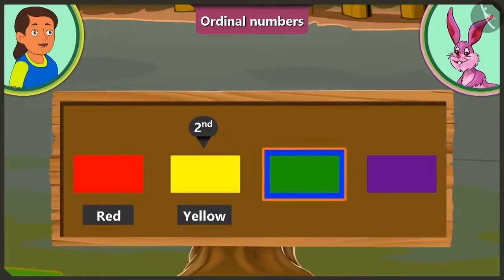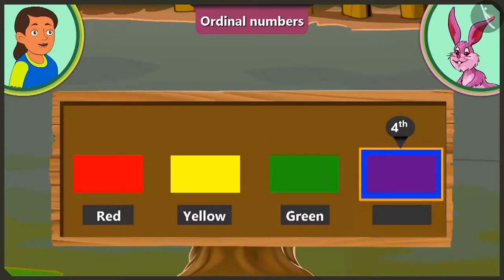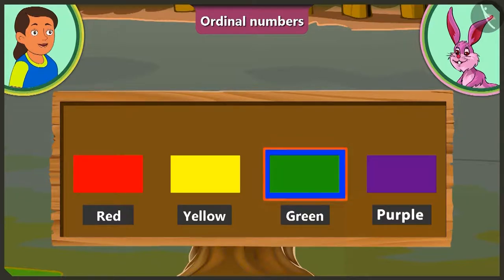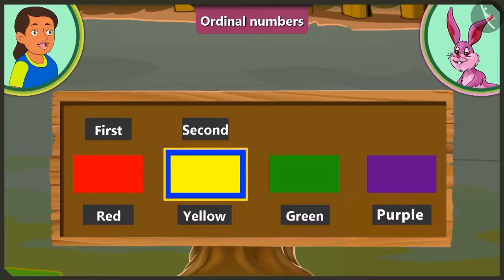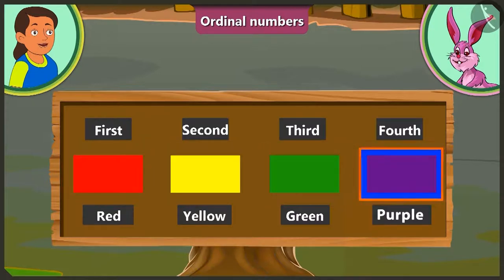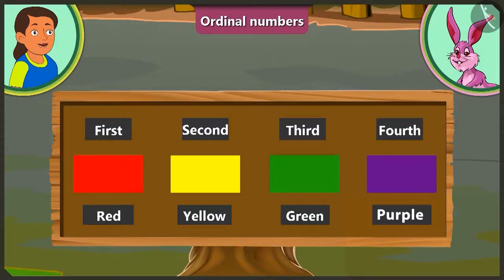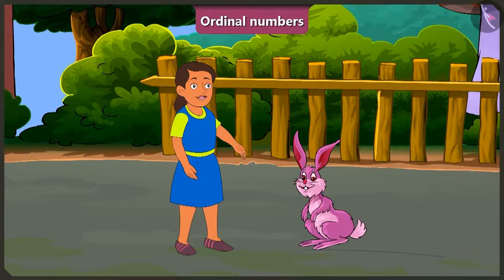At the first position is the red color, at the second position is the yellow color, green is at the third position, and at the fourth position is purple. Do you mean to say we have to use terms such as first, second, third, fourth to tell the position of a color? Yes, Bubbly! Ask me more — this is fun!